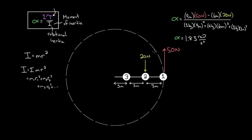To recap: just like Newton's second law relates forces to acceleration, this angular version of Newton's second law relates torques to angular acceleration. On the bottom isn't the mass, but the rotational inertia, which tells you how difficult it's going to be to angularly accelerate an object. You can find the moment of inertia of a point mass as mr², and for a collection of point masses by adding up all individual contributions.